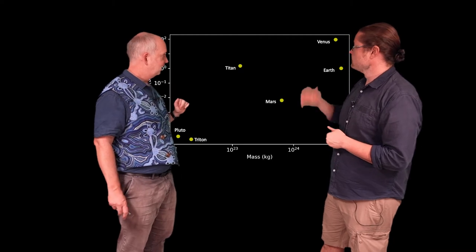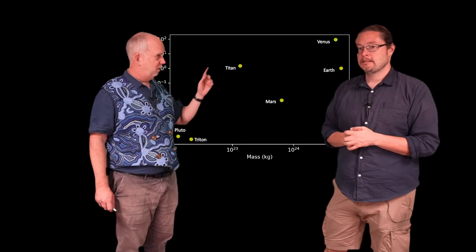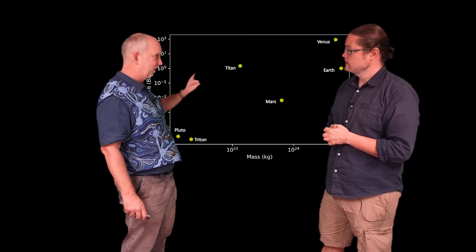And what you can see is that the bigger mass ones, Venus and Earth, have higher atmospheric pressure. And then you get Mars and Titan, which we're going to come back to.